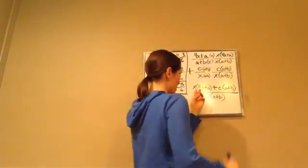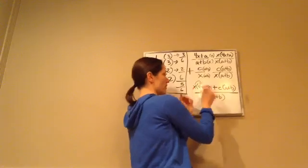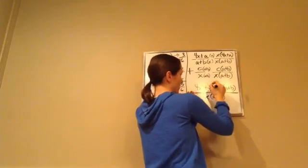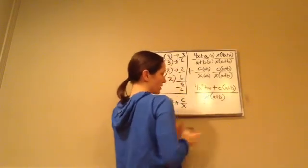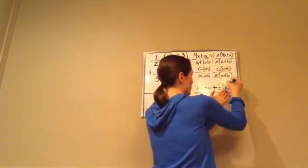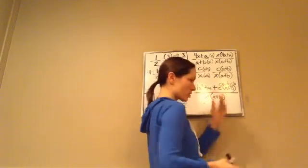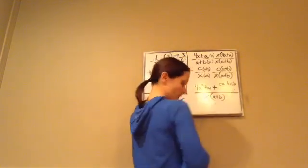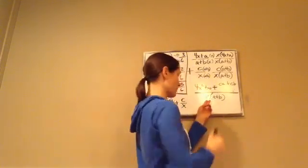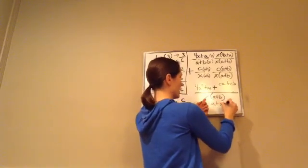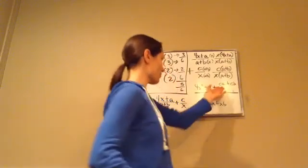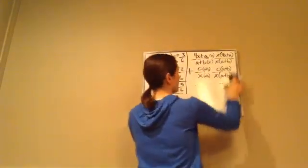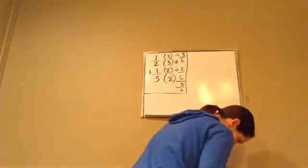So the final answer is: X(4X plus A) plus C(A plus B), all over X(A plus B). If you wanted to expand: X times 4X is 4X squared, X times A is XA, and C times A plus B gives CA plus CB. You can also write the denominator as XA plus XB. There are several different forms, but they all give the same answer.